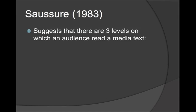Saussure, 1983, suggested there are three levels on which an audience read a media text. The first is the syntactic level where an audience identifies the basic denotations of a text. This is the most obvious level of meaning and it's where they describe what they can see. So they might say the characters are, the filmmaker has used the colour blue quite a lot, etc.